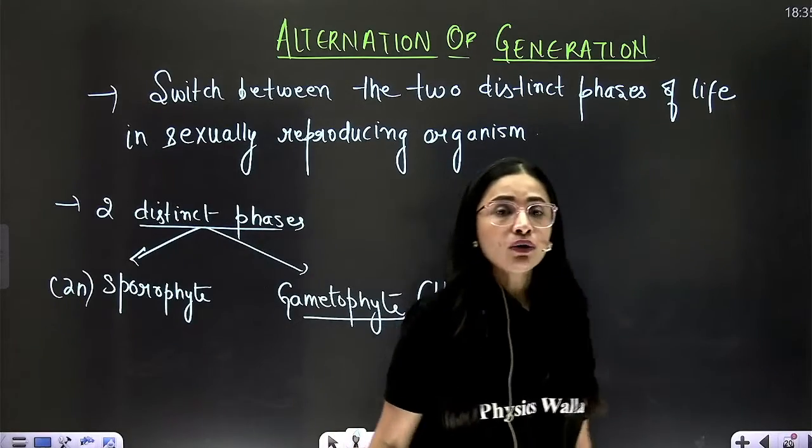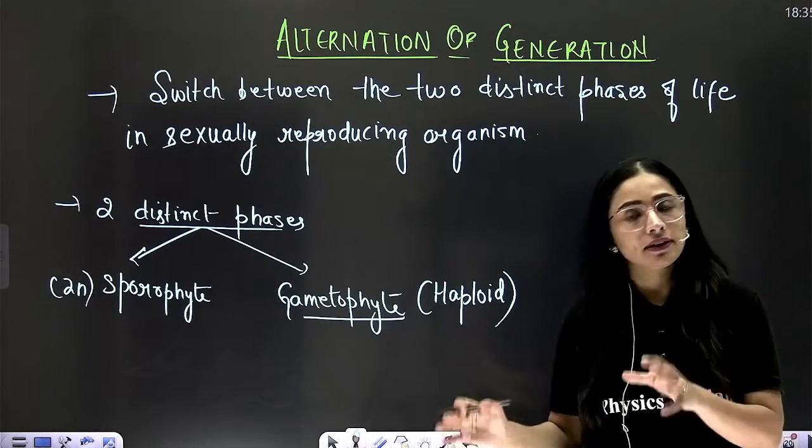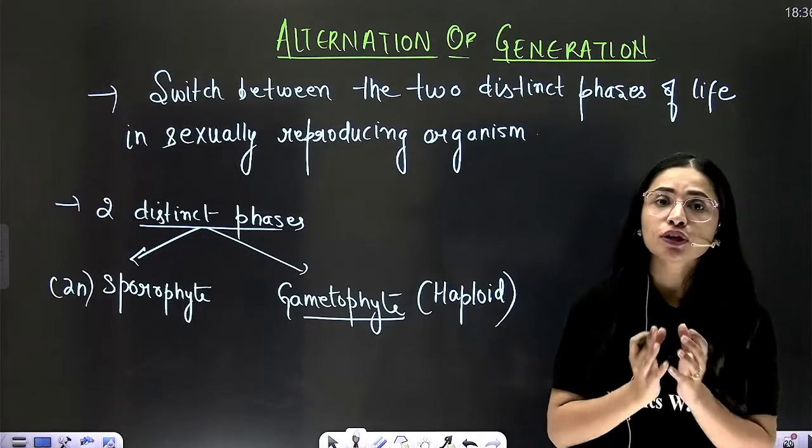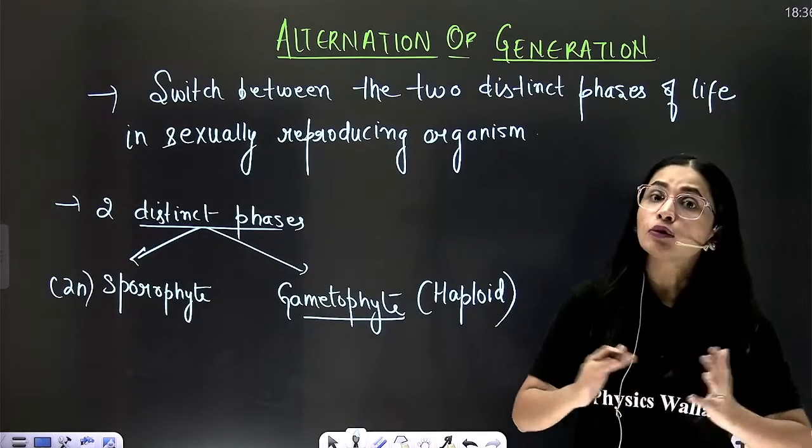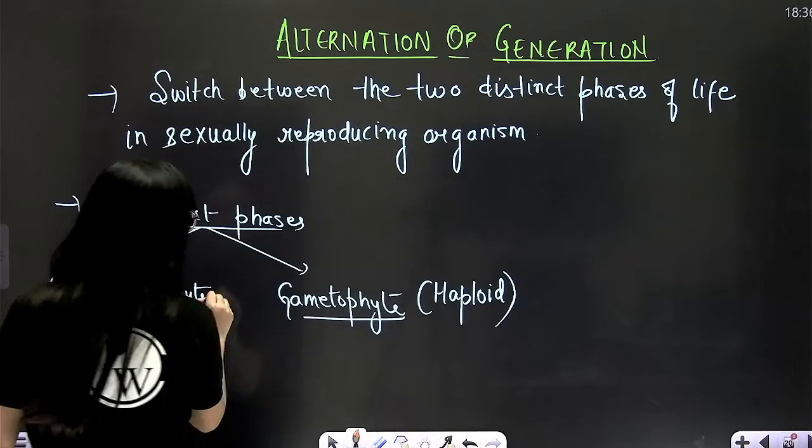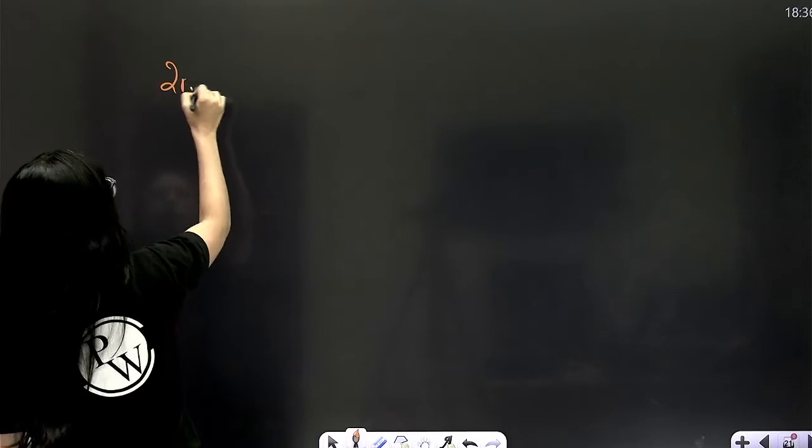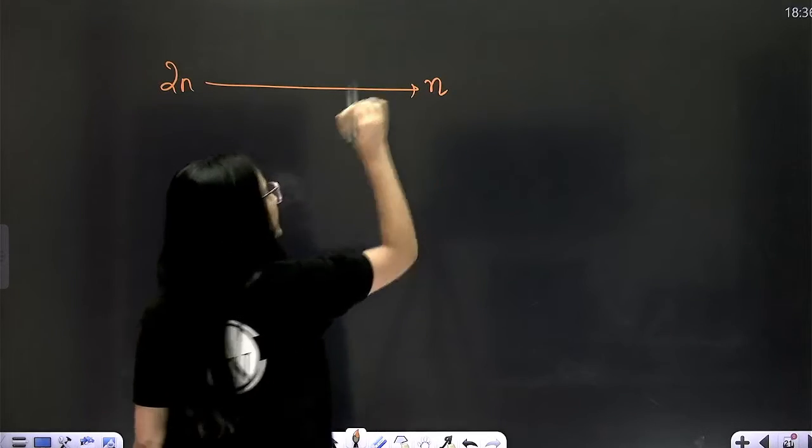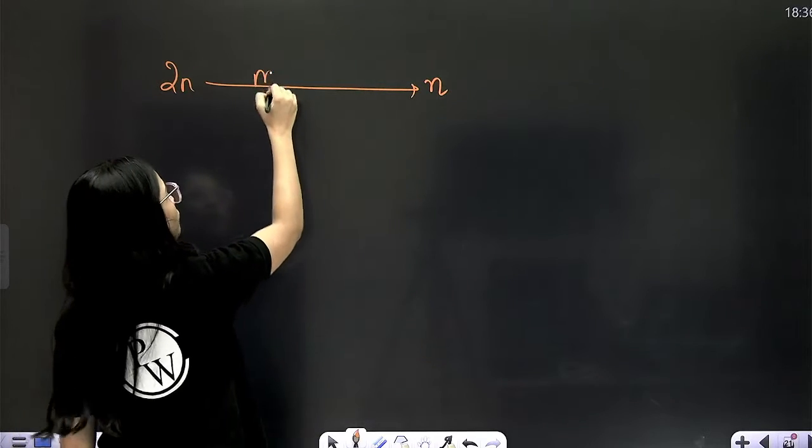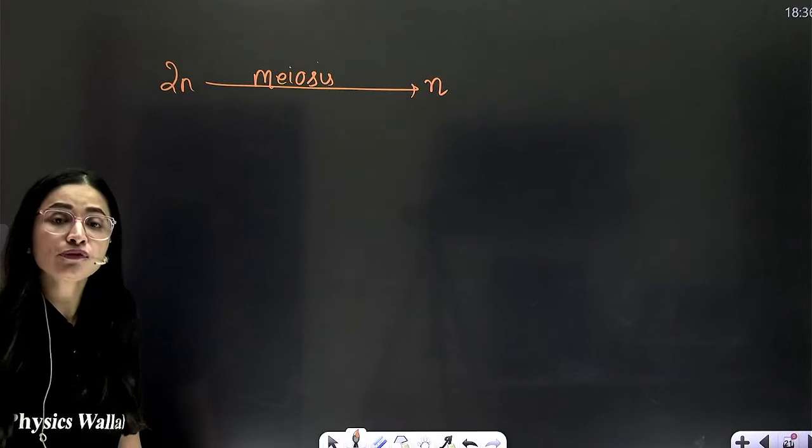Now, switch between this diploid and haploid is known as alternation of generation, which is very important in sexually reproducing organisms. How does this take place? Now students, if we want to switch from 2N to N, that means if we want to switch from 2N, sporophytic to haploid phase, gametophytic phase, then the way is performing reduction division, that is meiosis. Right? That means gamete formation.